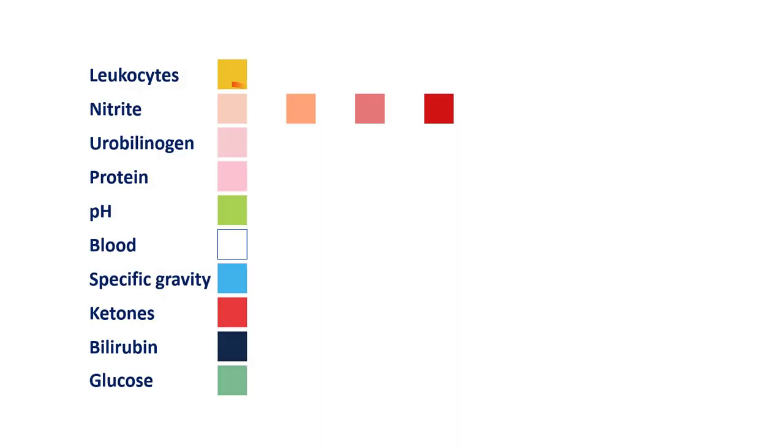Imagine a patient with very bad dysuria and urgency who has to rush to the toilet every 15 minutes, not to mention that people with urinary tract infections often drink a lot of fluids. All of this results in dilute urine with a very low concentration of bacteria and a low concentration of nitrites.